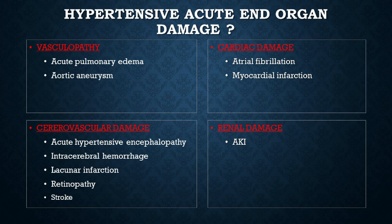Cardiac damage includes AFib, heart failure, left ventricular hypertrophy, and myocardial infarction. Renal damage includes acute kidney injury, albuminuria, CKD — which is chronic kidney disease — and proteinuria.